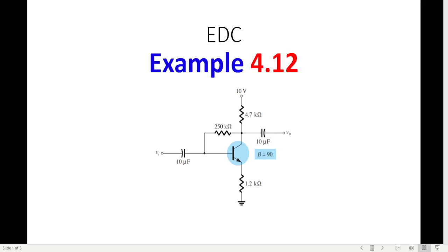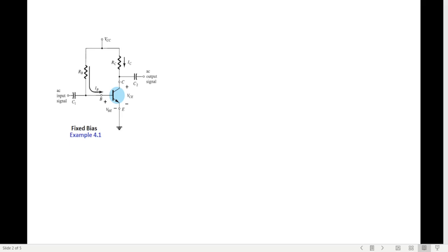In this video we will be discussing example 4.12 from EDC, and this is on the request of a student. Before we start the actual question, let me just recall that we have done three types of circuits. This is called fixed bias, and example 4.1 was solved.